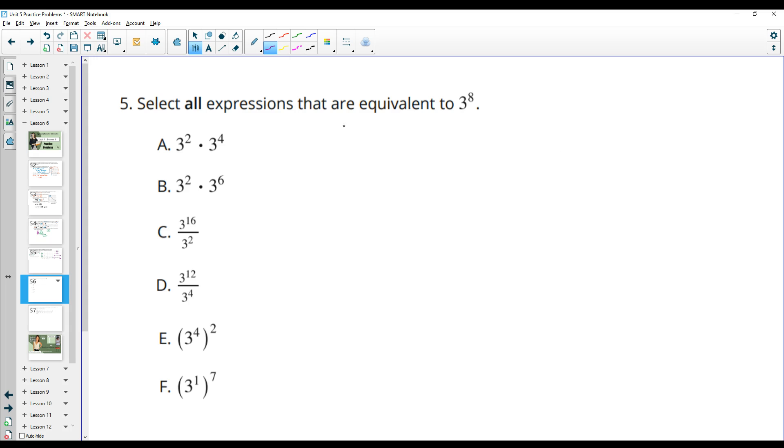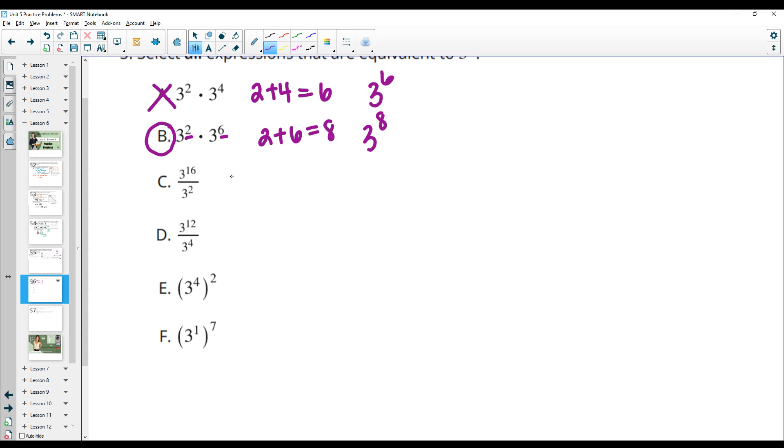Number five, select all expressions that are equivalent to 3 to the eighth power. So part A, when we multiply powers of the same base, we add those exponents. So 2 plus 4 is 6. So this one is 3 to the sixth. That is not 3 to the eighth. For this one, we would add the 2 and the sixth. And we'd get 8. So this one is 3 to the eighth power. So that one's good. When you divide powers of the same base, you subtract their exponents. So we'd have 16 minus 2, which is 14. So this one would be 3 to the 14th. So that one's bad. And then here we would have 12 minus 4, which is 8. So this one is 3 to the eighth. That would be good.